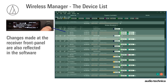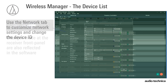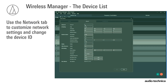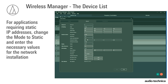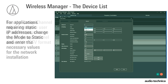Changes made at the receiver front panel are also reflected in the software. Use the Network tab to customize network settings and change the device ID. Default IP settings are automatic. Applications requiring static IP settings can be configured by changing the IP mode to static and entering the necessary values for the network installation.